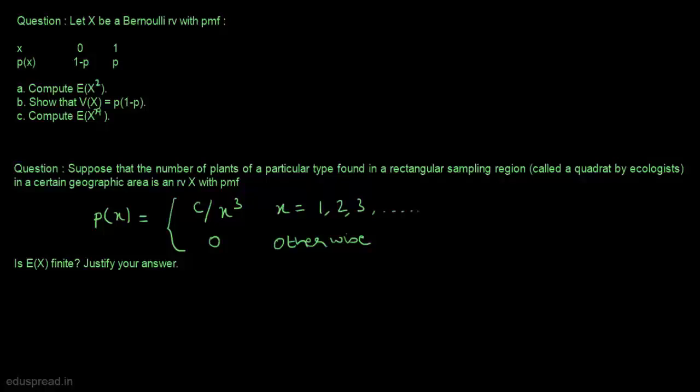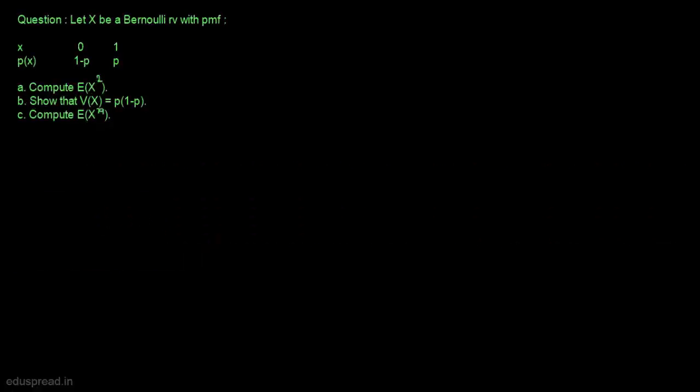In this lecture, I am going to discuss these two questions. So let's start with question number one. Let x be a Bernoulli random variable with this probability mass function. In part a, we have to compute the expected value of x square.